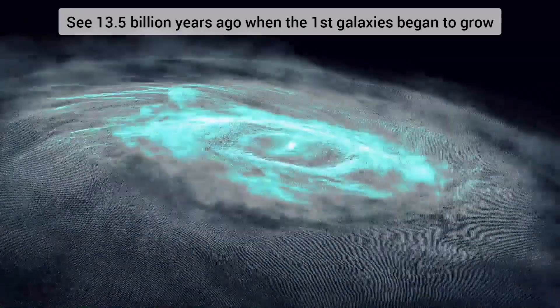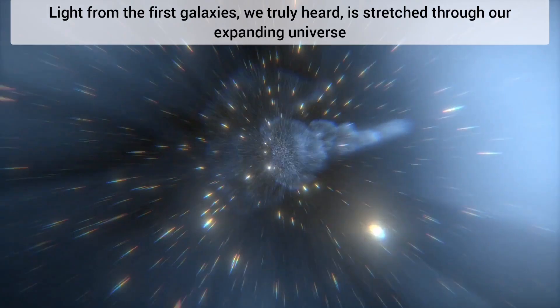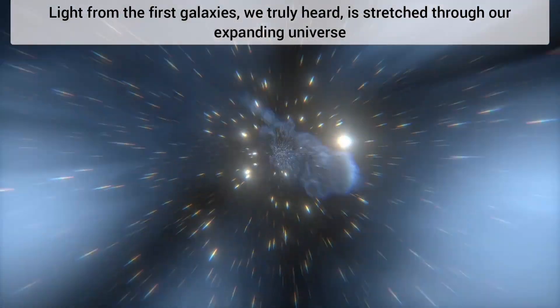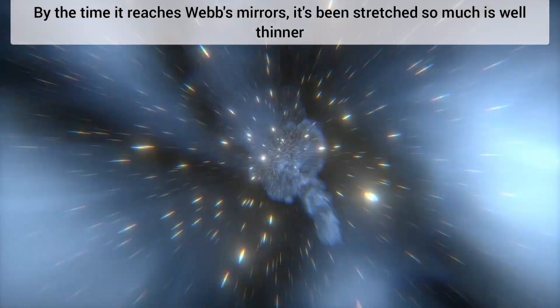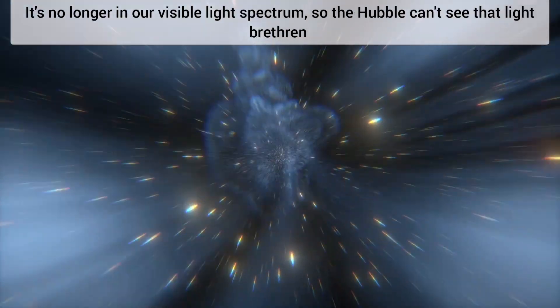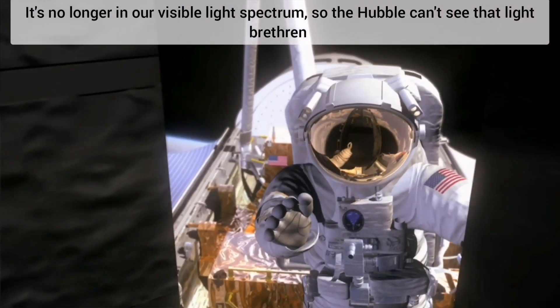See, 13.5 billion years ago when the first galaxies began to grow, light from the first galaxies is stretched through our expanding universe. By the time it reaches Webb's mirrors, it's been stretched so much it's in longer wavelengths. It's no longer in our visible light spectrum, so the Hubble can't see that light, brethren.